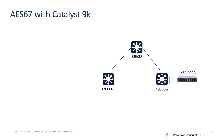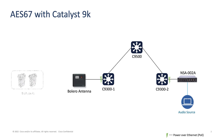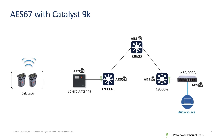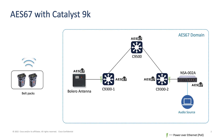We have a RIDL Bolero NSA002A connected to the 9300-2 switch. This provides bidirectional signal conversion between analog signals and AES67, and this is where the audio source is connected, which will broadcast a stream across the network. We also have a Bolero antenna connected to 9300-1, where there are two beltpacks wirelessly paired with this antenna. We are also leveraging power over Ethernet capabilities on both the 9300s so that the endpoints are powered by the switch rather than an external source.